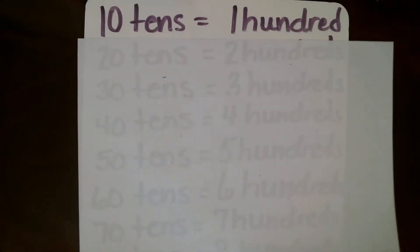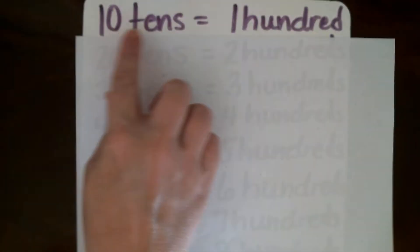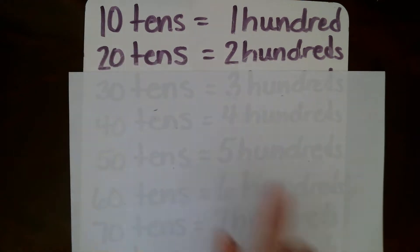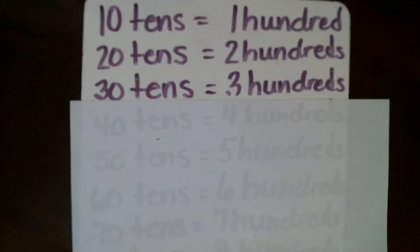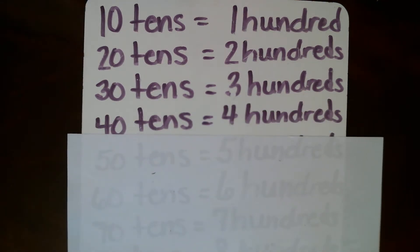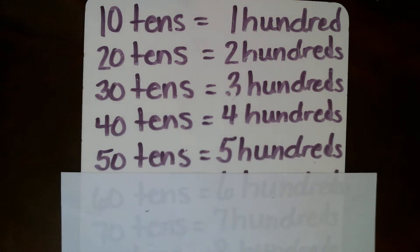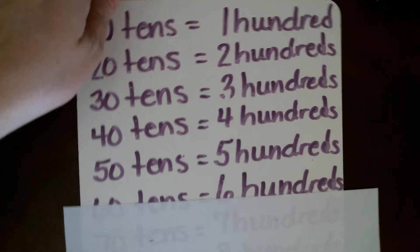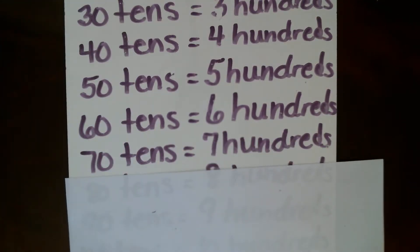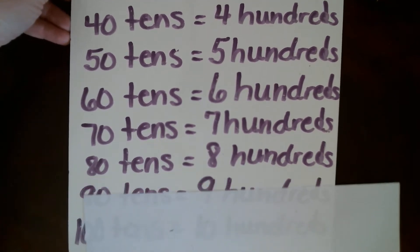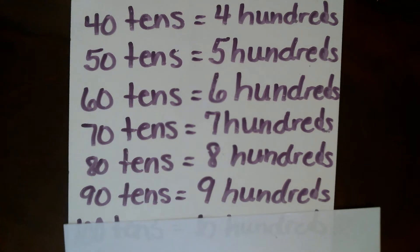Let's quickly review: ten tens make one hundred. Twenty tens is the same as two hundreds. Thirty tens is the same as three hundreds. Forty tens is the same as four hundreds. Fifty tens is the same as five hundreds. Sixty tens is the same as six hundreds. Seventy tens is the same as seven hundreds. Eighty tens is the same as eight hundreds. Ninety tens is the same as nine hundreds.